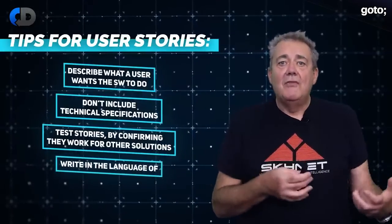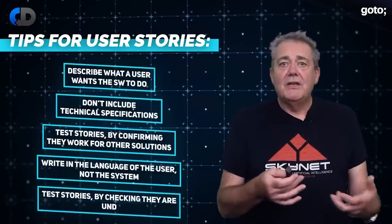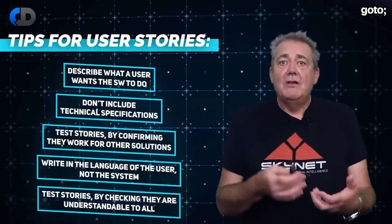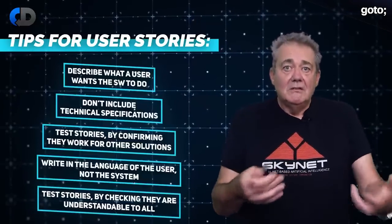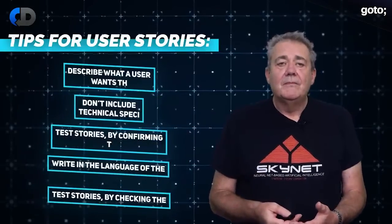Use language that a non-technical person can understand. Imagine asking or ask somebody who understands the problem but knows nothing about your system to read your story. Would it still make sense to them? The goal of user stories is to be intentionally deliberately high level. A good user story is accurate enough to capture the goal and vague enough to allow lots of different ways to achieve the goal.